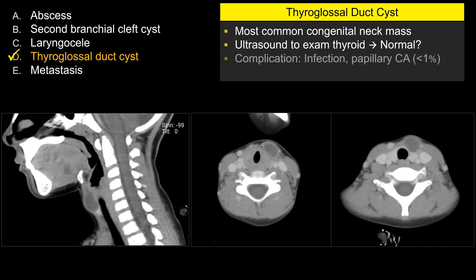Whenever you suspect a thyroglossal duct cyst, you want to confirm the thyroid gland looks okay — you can do that with ultrasound. Complications include infection, which can make it look like an abscess with rim enhancement and surrounding soft tissue inflammation. Trauma can cause internal hemorrhage. Rarely, there can be malignant transformation, especially papillary thyroid cancer. For that reason, you want to excise the whole thing using the Sistrunk procedure — excision of the internal tract plus the surrounding tissue — which is considered curative.